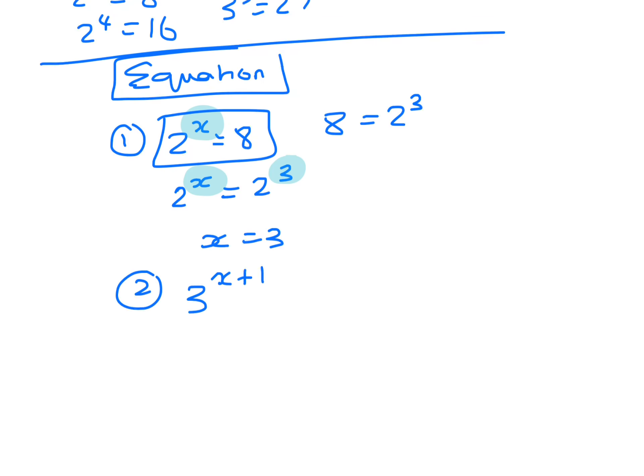So say we have 3 to the power of x plus 1 and that one equals 81. Then what you do is you go 3 to the power of x plus 1. Now 81 would be 3 to the power of what? So just try it. We know 3 to the 2 is 9, 3 to the 3, just get your calculator, is 27.